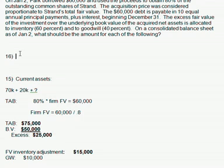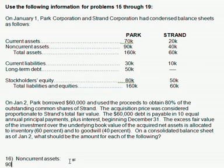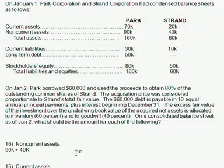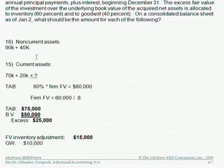Problem 16 is asking for non-current assets. You've got $90,000 of Park and $40,000 of Strand — you just add non-current assets. They're the best account in this chapter. Now, we also have goodwill, and it's not recorded on this balance sheet. That's a non-current asset, so we add the goodwill of $10,000 that we solved last problem. That's going to give us $140,000.